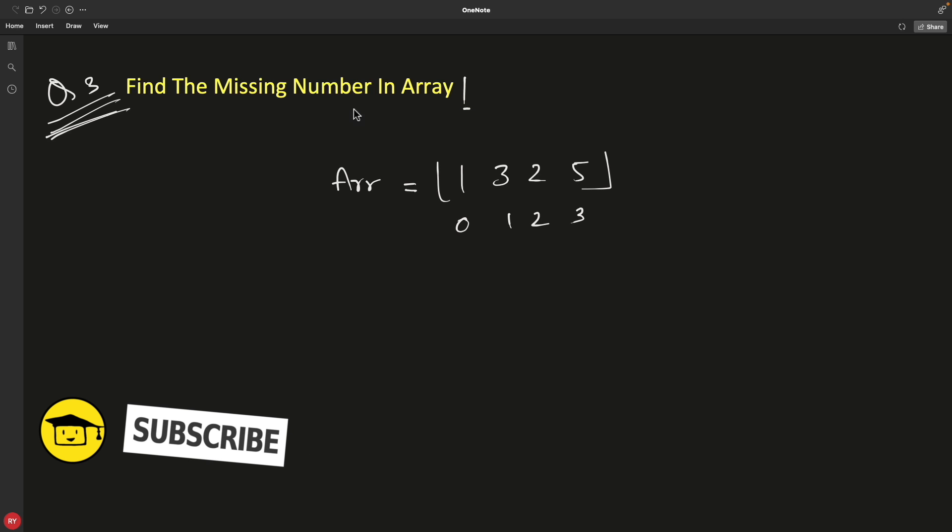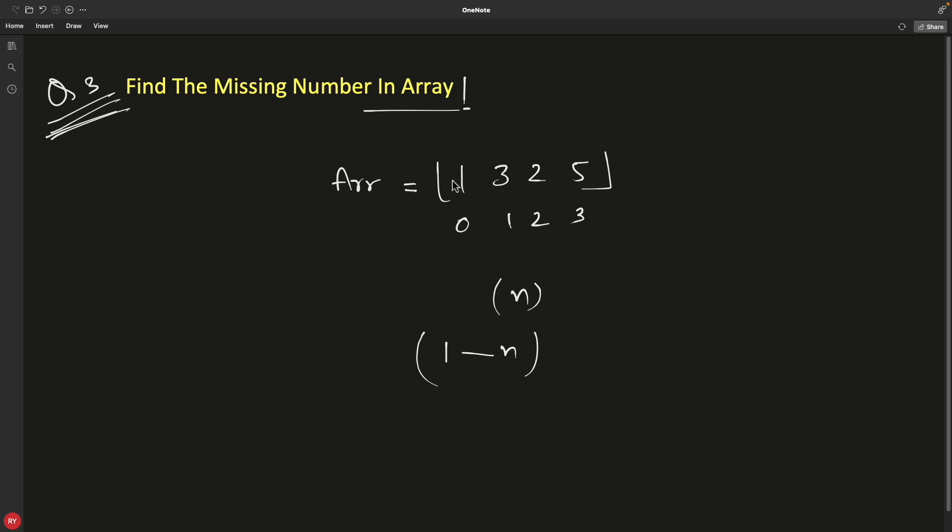The question is find the missing number in an array. The condition is if your array has size n, then the pattern of elements would be numbers from 1 to n. Here n is actually 5, because one number is missing.